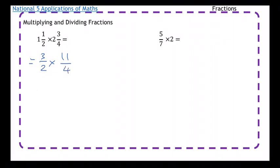Now I can just multiply along the top and along the bottom. So I get 3 times 11, which is 33, and 2 times 4, which is 8.